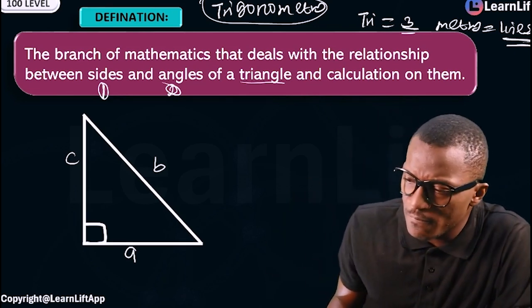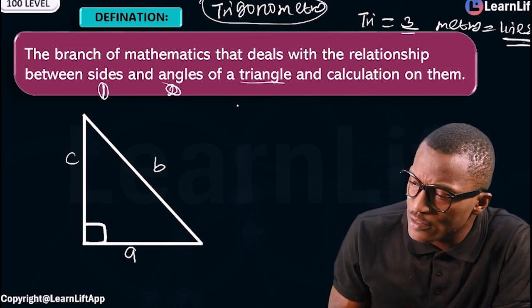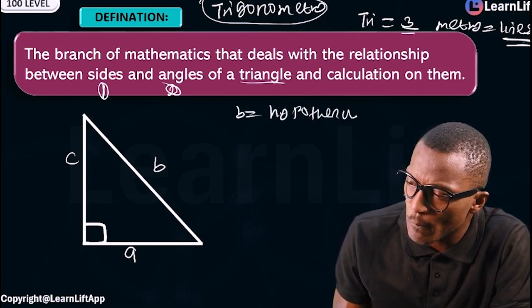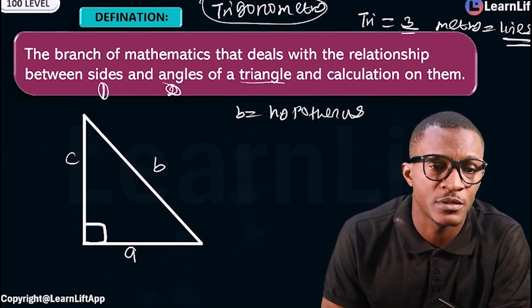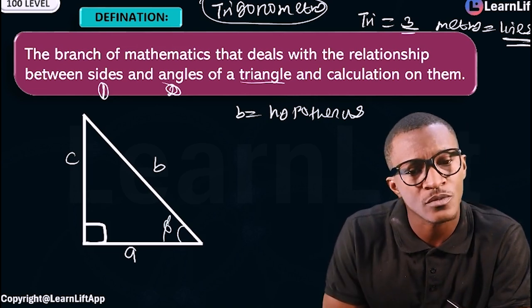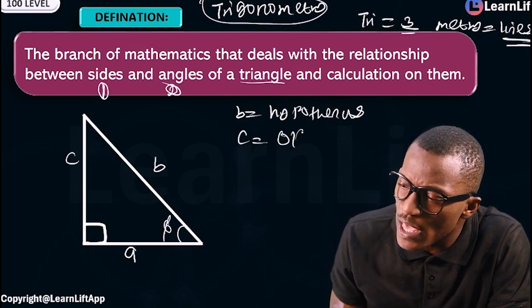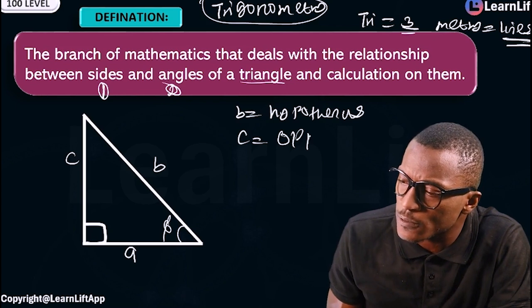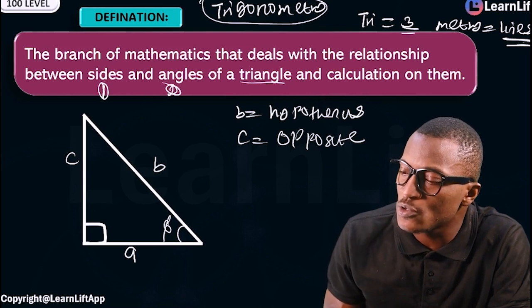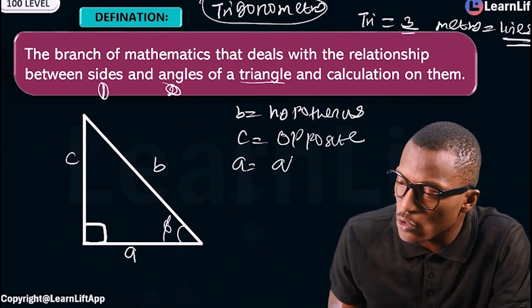We have labeled A, B, and C. The first thing to observe is that the longest side, B, is called the hypotenuse. Now if there's a longest side, let's call this angle theta. The side where the theta is facing, C here, is called the opposite. Anywhere this angle is facing is called the opposite. The last one will be called the adjacent.